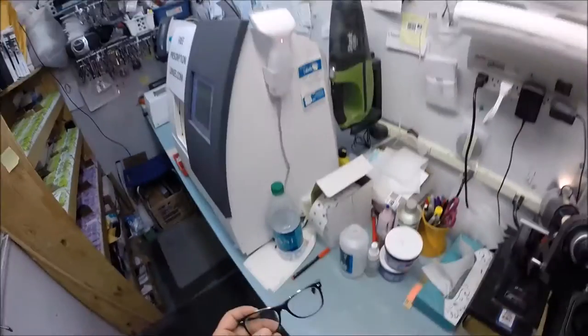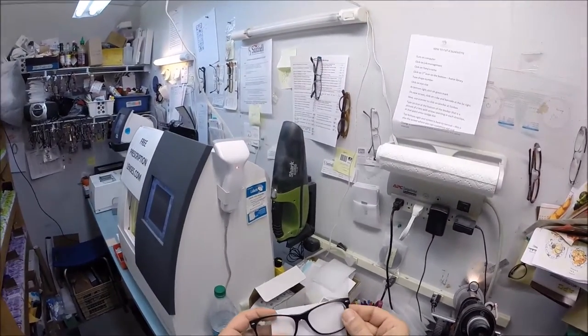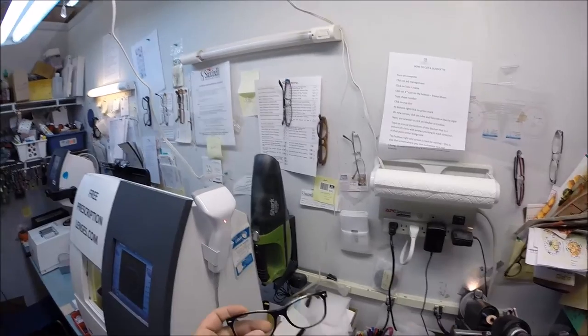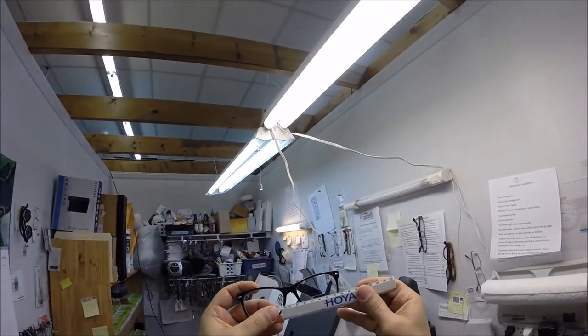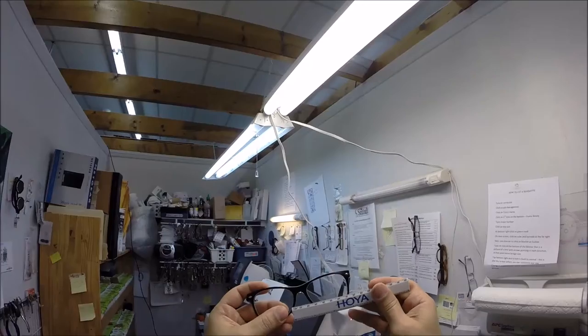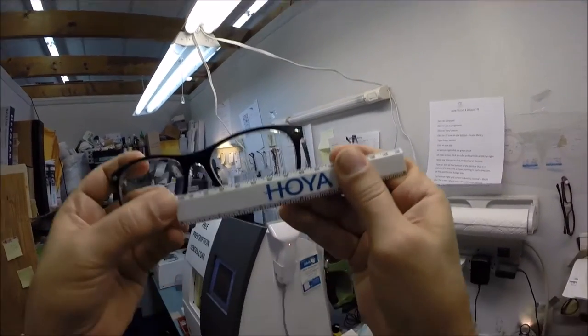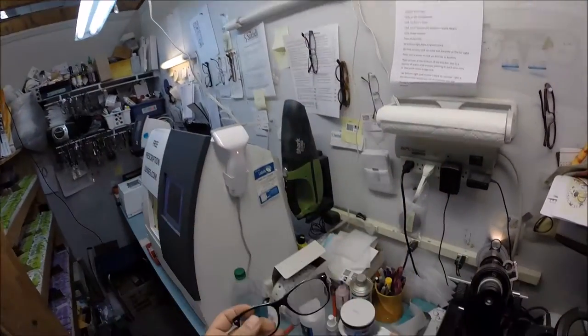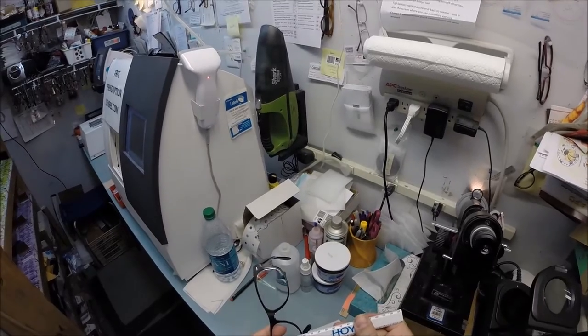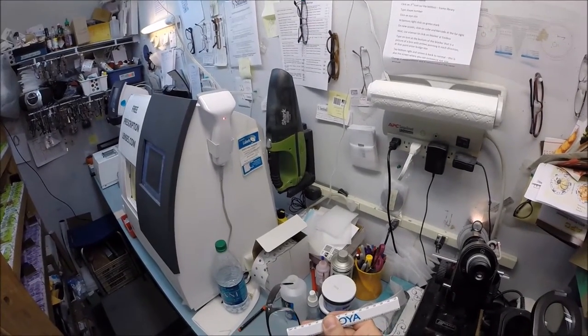Now your pupillary distance is 62. So for a bifocal with the line, I'm going to start at the outside corner and measure to the outside corner of this lens and we're getting 62 millimeters. So that is made perfectly. I do want to check your bifocal height real quickly. Perfect.